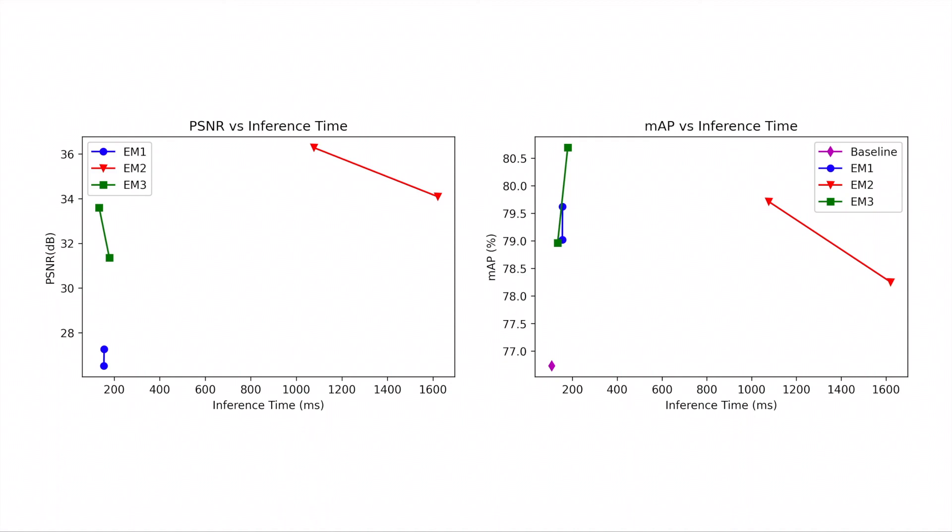As we can see here, EM2 has the highest PSNR and it also has a relatively high mean average precision when compared to the baseline model. And EM3 has the second highest PSNR and it has the second highest and also the highest mean average precision.